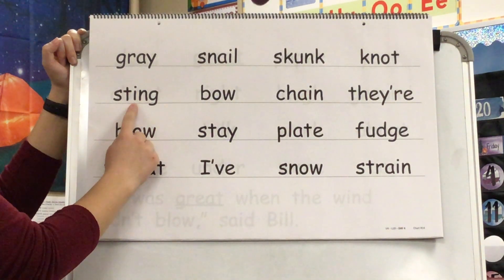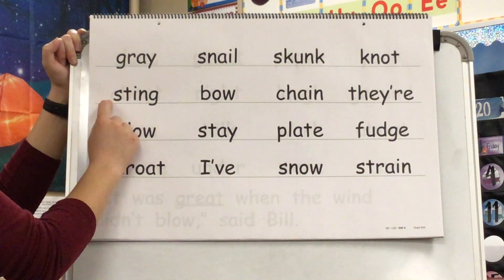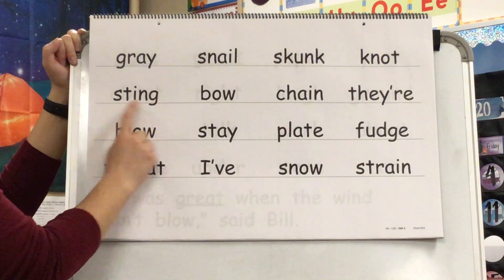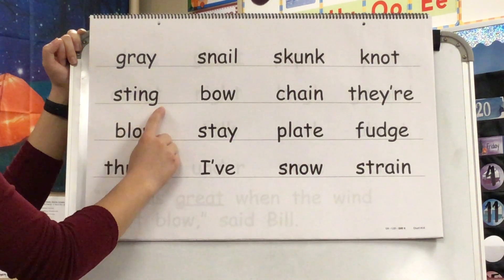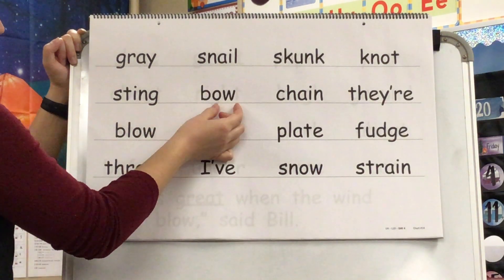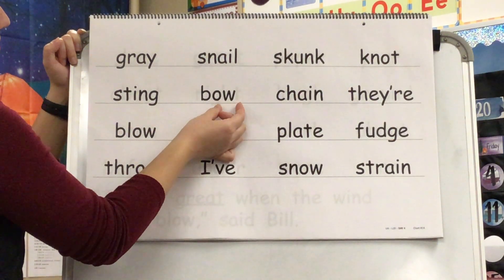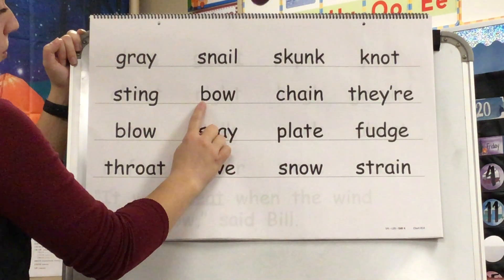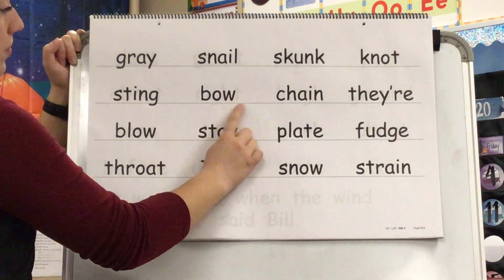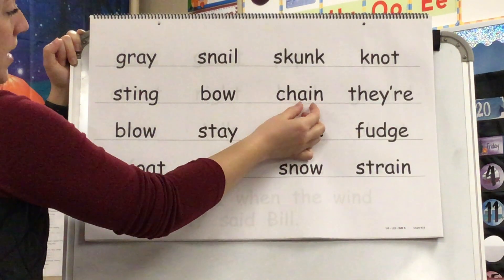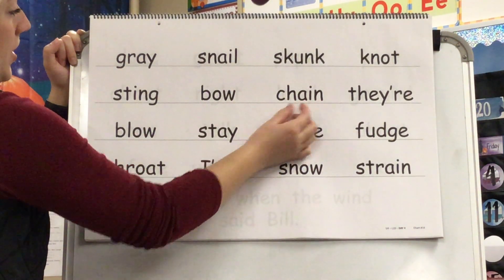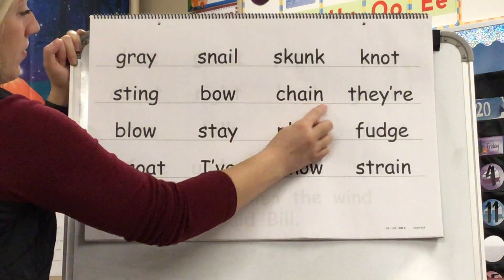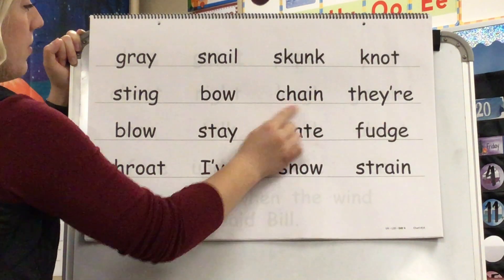Sound? I. Blend? St-ing. Word? Sting. Sound? O. Blend? B-o. Word? Bow. Sound? A. Blend? Ch-ain. Word? Chain.